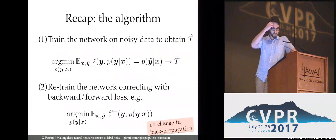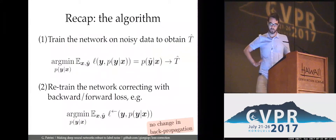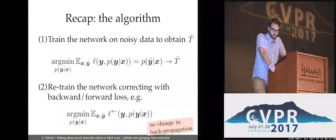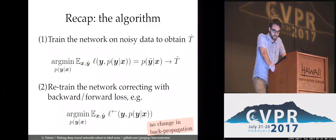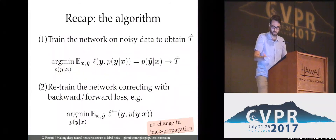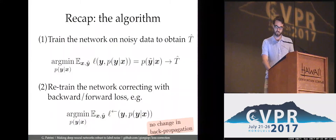Let's step back and put it all together. The algorithm is very simple: first, we train the neural net on the noisy data and estimate the matrix T. Second, we retrain the same neural network, this time correcting the loss function. That's it — no change in the training procedure. You just need to run it twice, with a noise estimation step in the middle, and no other changes.